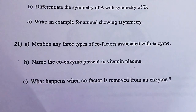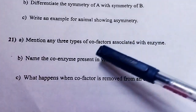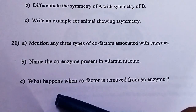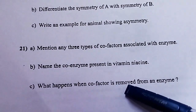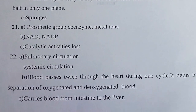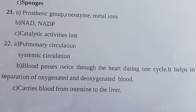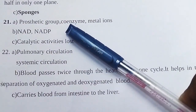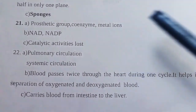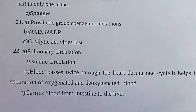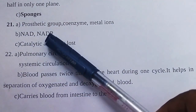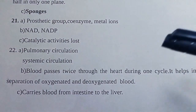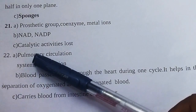Mention any three types of cofactors associated with enzymes. Name the coenzyme present in vitamin niacin. What happens when cofactor is removed from an enzyme? The three types of cofactors are: 1. Prosthetic group, 2. Coenzyme, 3. Metal ions. The coenzyme present in niacin is NAD and NADP. When a cofactor is removed, catalytic activity is lost.